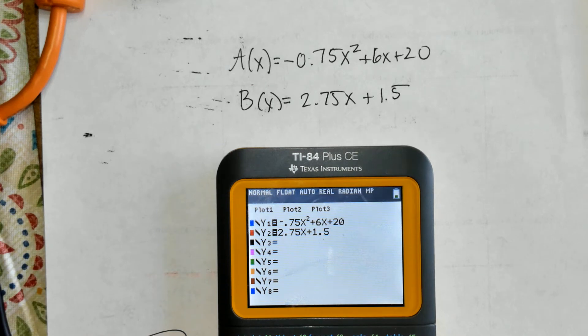Part A says solve the system and list the two solutions, round to the nearest hundredth. So could we set these equal? Absolutely and do this algebraically. It just may be a lot of work. So when you have a calculator available, I'm going to plug them in.